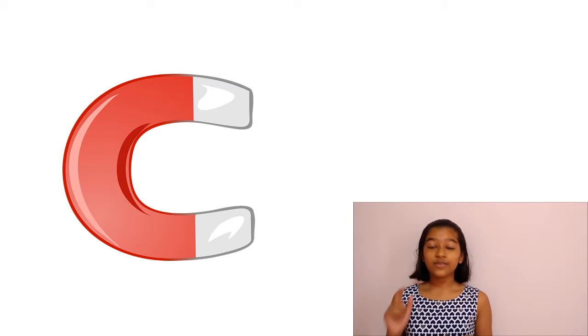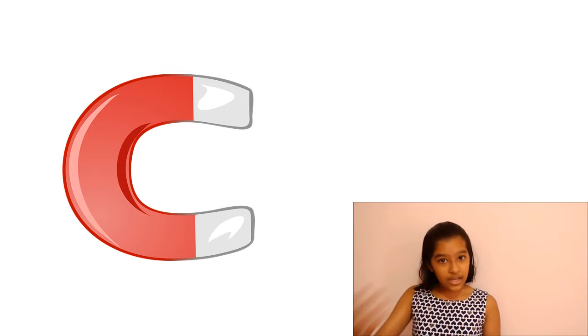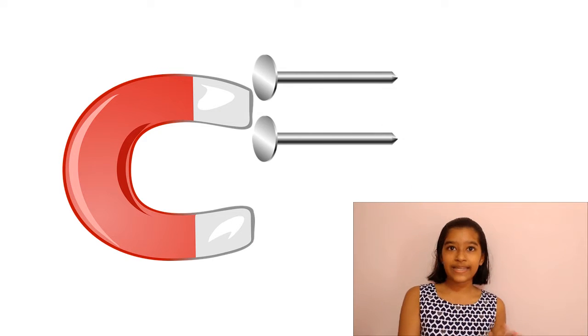So first let's understand what a magnet is. A magnet is a kind of material which attracts other magnets or other iron materials.